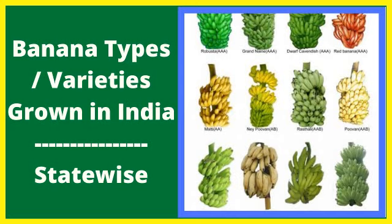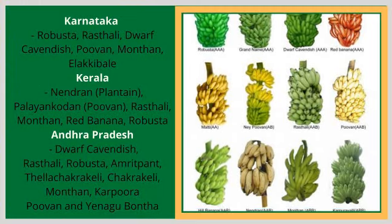India has an array of cultivars grown throughout the country depending upon preference, resource availability and production system. Dwarf Cavendish and Robusta are widely adopted commercial bananas owing to high yield, wide market acceptability, ability to withstand wind, short duration and high economic conditions.